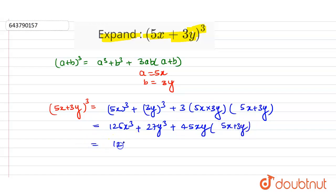Now in the next step it will be 125x³ + 27y³ + 45 into 5, it will be 225x²y, plus 45 into 3, that is 135xy².